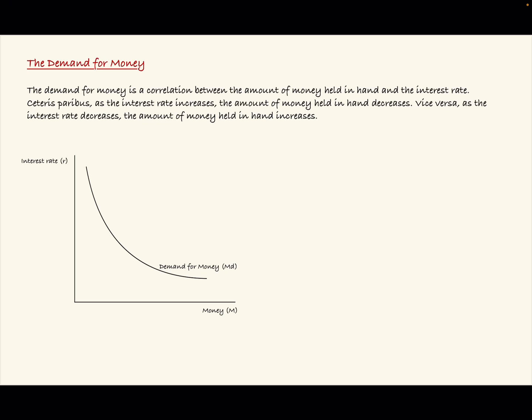We can see that in the demand curve for money, MD, below. It plots the relationship between the amount of money held in hand, which is on the horizontal axis, and the interest rate, or R, which is plotted on the vertical axis. We can see this inverse relationship: as the interest rate R increases, the amount of money held in hand M decreases; as the interest rate R decreases, the amount of money held in hand M increases.